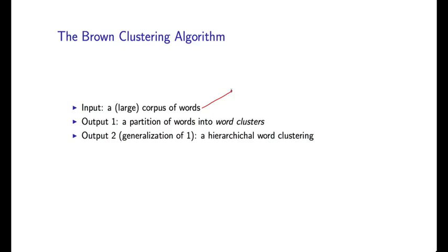One advantage of the Brown method is that it doesn't require annotated data. So you can just use raw, unannotated text that you might find on the web or in newswire data or various other sources. It can produce two types of output. The first is a partition of words into word clusters. And the second is actually a generalization of the first, which is a hierarchical clustering of words. Let me give you some examples of these two types of outputs.